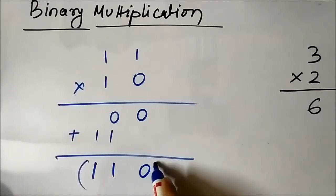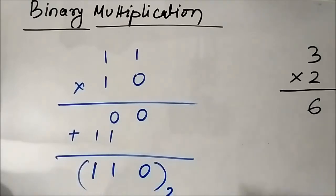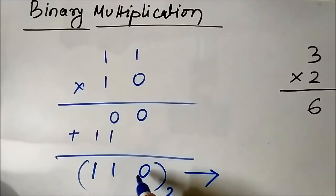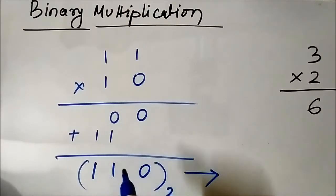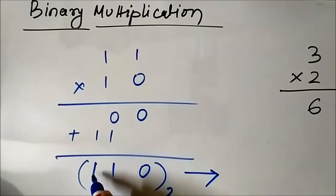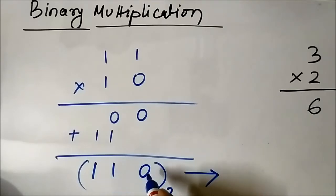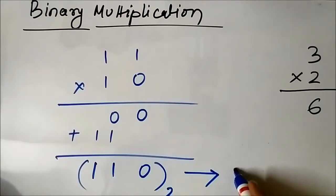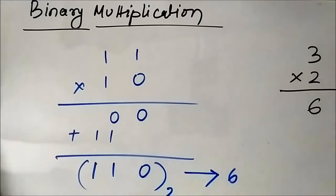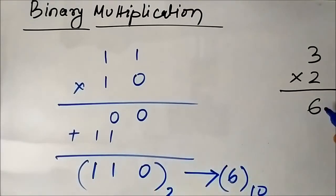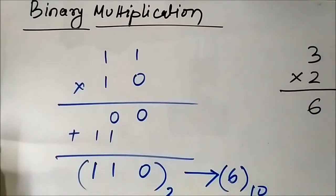The binary result is 1 1 0. If we apply the sum-of-weights method: 1×2² + 1×2¹ + 0×2⁰ = 4 + 2 = 6. Our answer is correct — it is the same as the result we got in decimal representation.